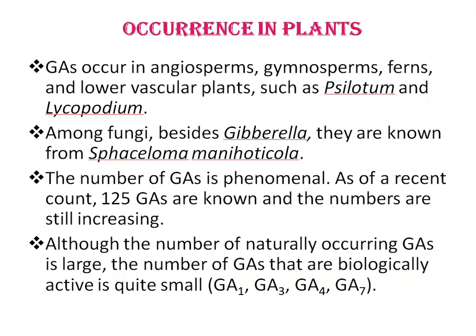Gibberellins occur in most angiosperms, ferns, and lower vascular plants like Selaginella and Lycopodium. Among fungi, besides Gibberella, they are known from Sphaceloma manihoticola, an ascomycete which causes the super elongation disease of manioc (cassava), and also from Fusarium species. The number of gibberellins is phenomenal — 125 gibberellins are known and the numbers are still increasing. Although the number of naturally occurring gibberellins is large, the number that are biologically active is quite small; only GA1, GA3, GA4, and GA7 are some biologically active gibberellins.